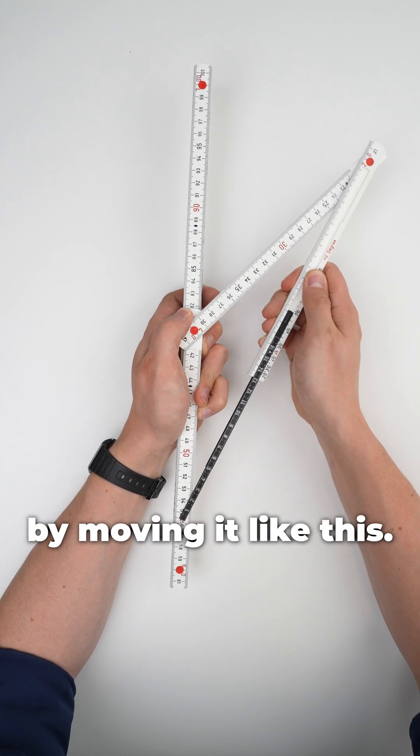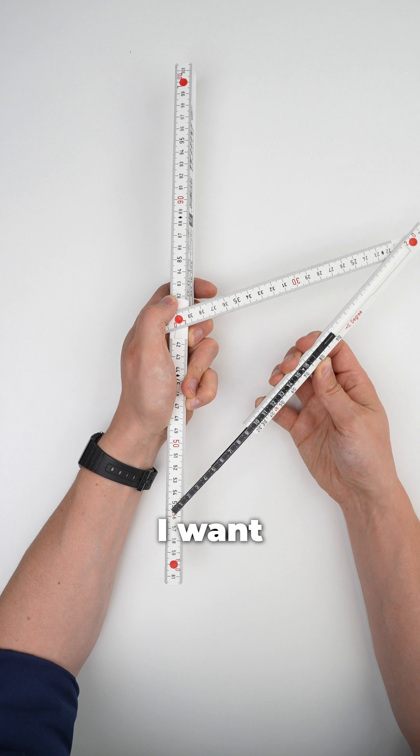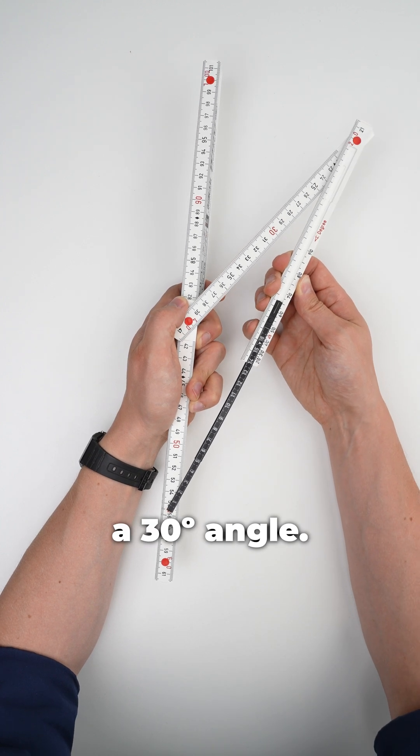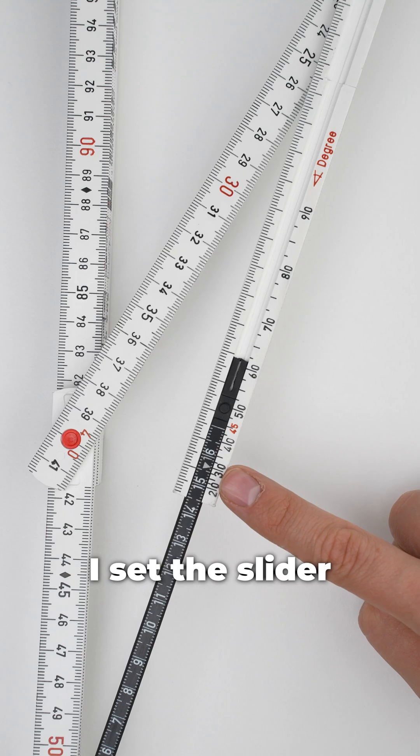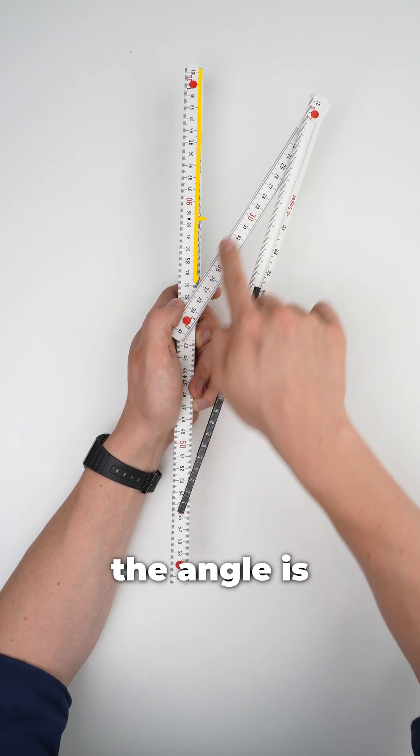You change the value by moving it like this. For example, I want to create a 30 degree angle. So I set the slider to 30 and the angle is right here.